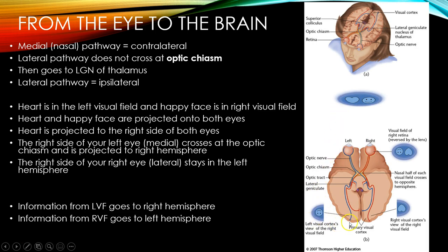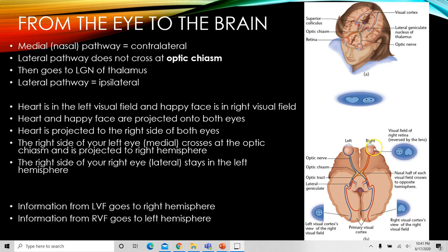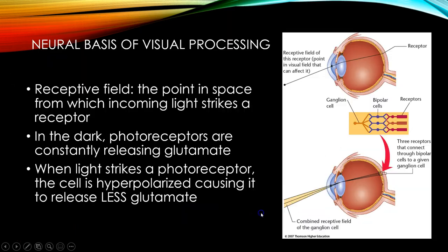The left visual field is reflected to the right side of both eyes, and then that information is sent from the right side of the right eye and the right side of the left eye over to the right visual cortex. In that way, the heart — what was in the left visual field — is processed by the right hemisphere. So information from the left visual field goes to the right hemisphere, and from the right visual field goes to the left hemisphere.